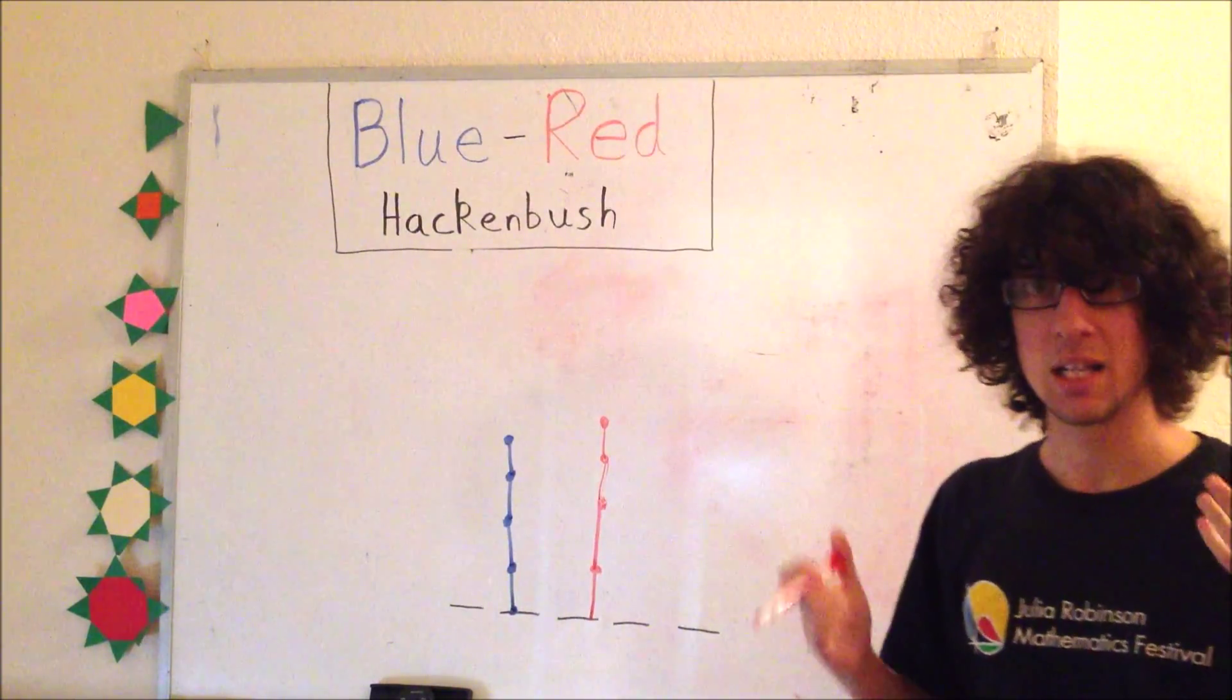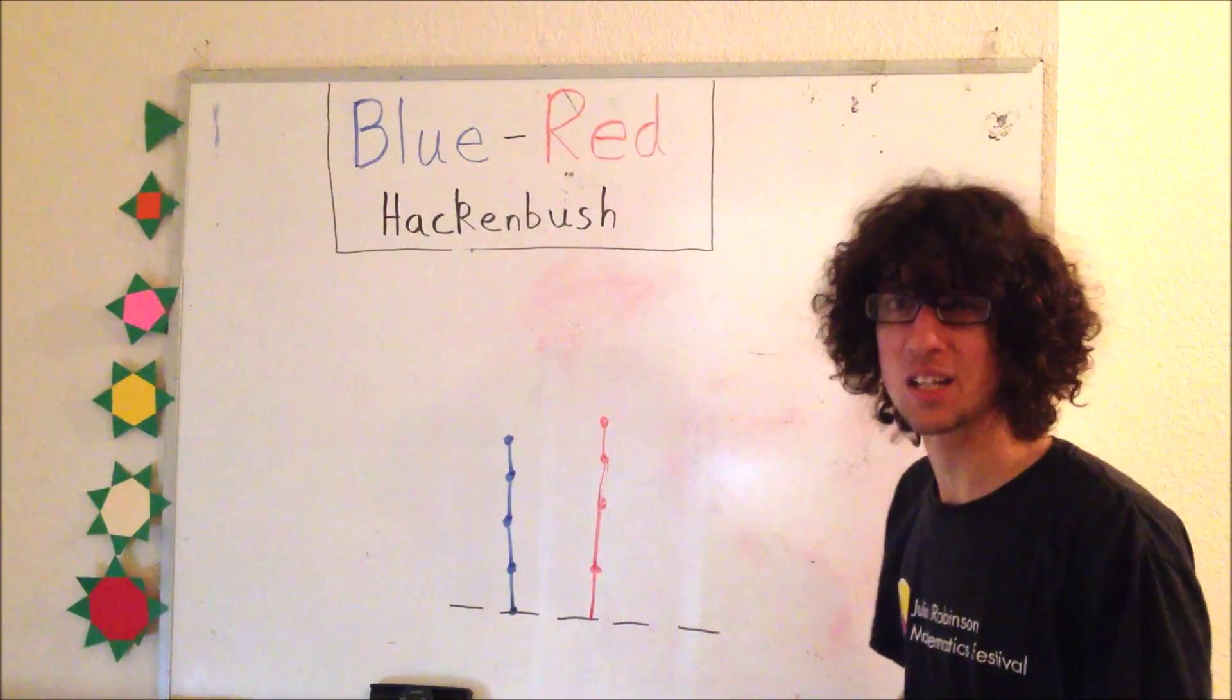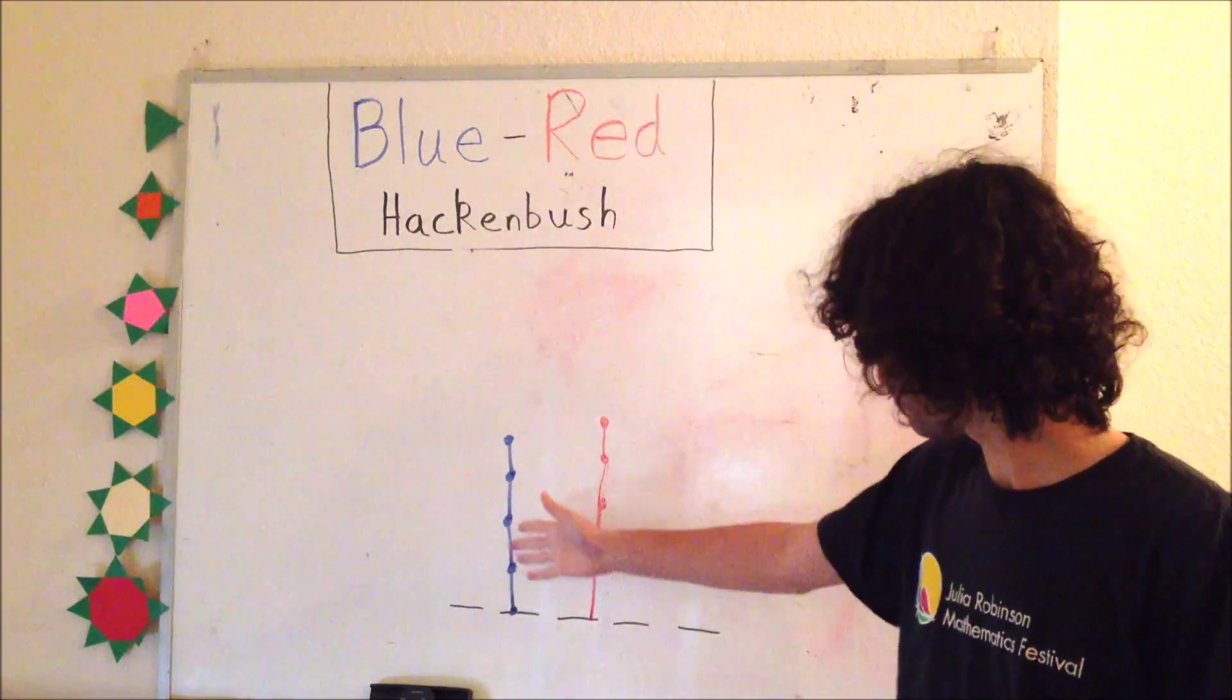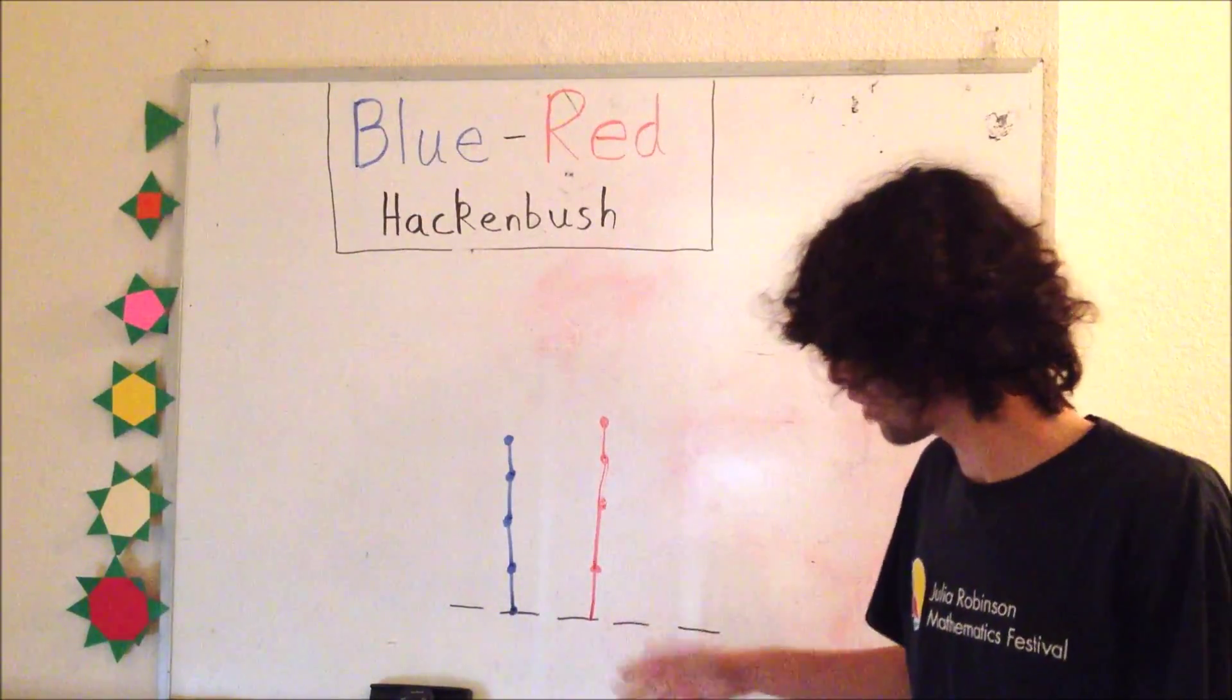That's going to be a basic term that we're going to be talking about a lot. I'm going to call those positions zero games. A zero game is a game where the second player wins. And you can get a sense for these zero games if I have four over here and four over here, four for blue and four for red.